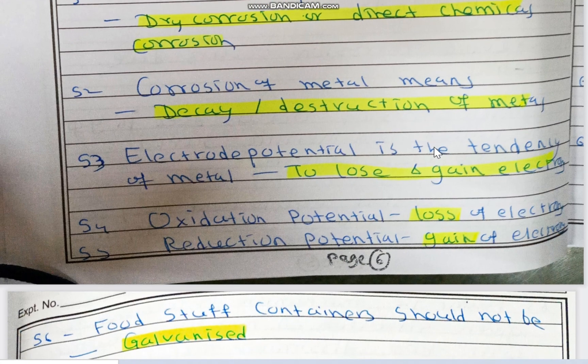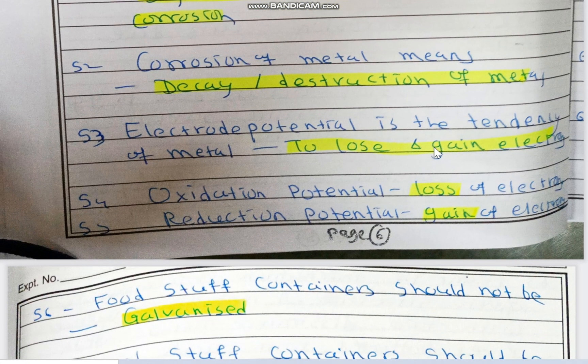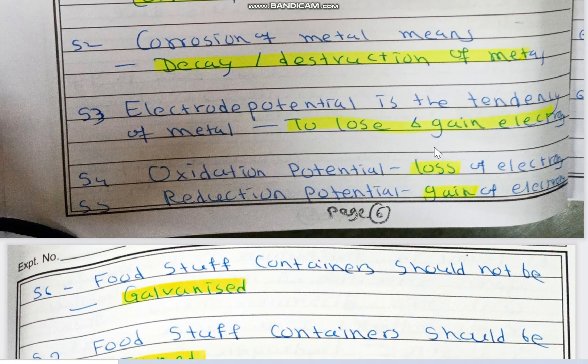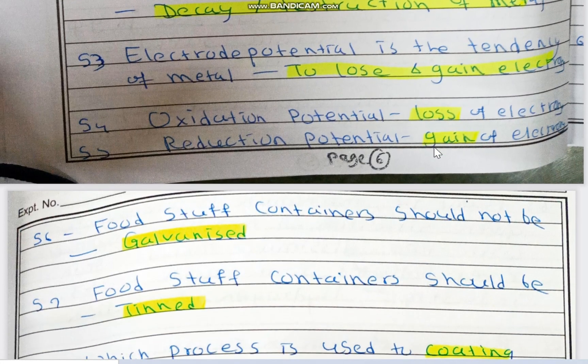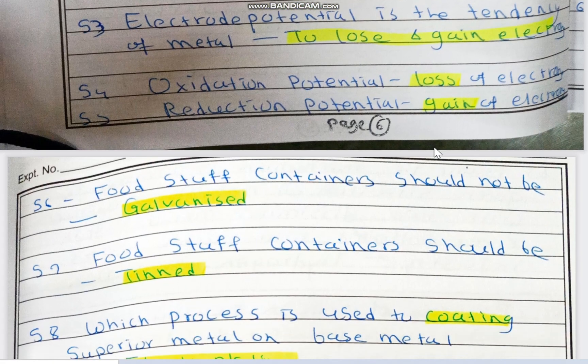Electrode potential is the tendency of metal to lose and gain electrons. When combined tendency, it is known as electrode potential. When there is only loss of electron, it is known as oxidation potential. If there is only gain of electron, it is known as reduction potential.